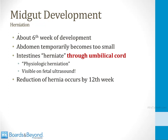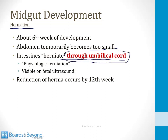Midgut development involves two key phenomena: herniation and rotation. Herniation is where the midgut normally exits the abdomen and then returns — a normal part of development. Around week 6, the abdomen temporarily becomes too small, so the midgut herniates through the umbilical cord. This is called physiologic herniation, visible on fetal ultrasound, and the hernia reduces, with contents returning to the abdomen by about week 12.